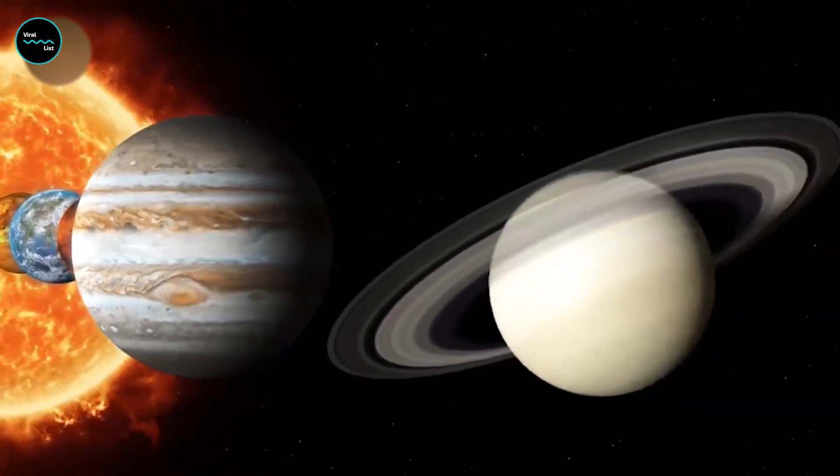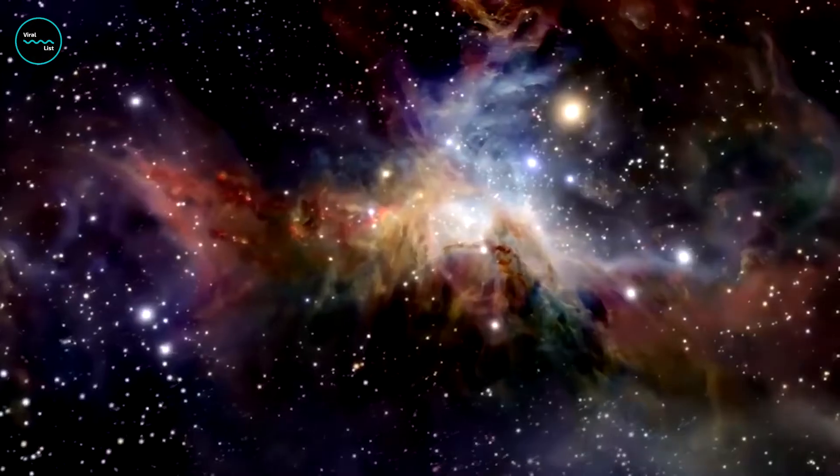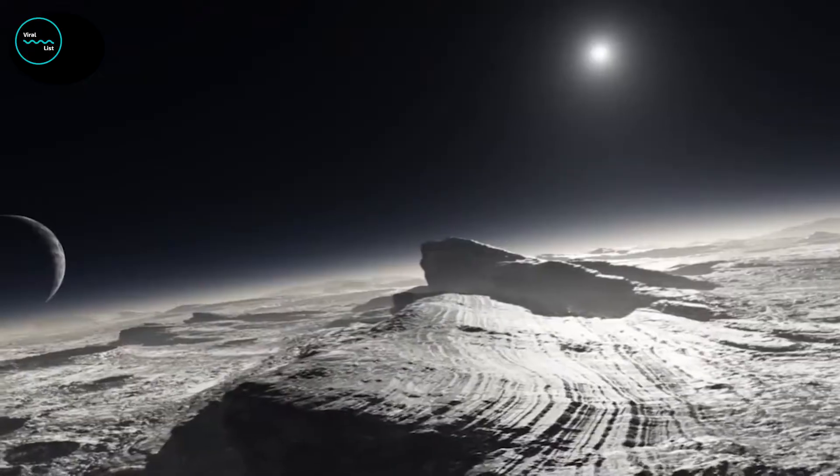Many scientists think the sun and the rest of the solar system formed from a giant rotating cloud of gas and dust known as the solar nebula. As the nebula collapsed because of its gravity, it spun faster and flattened into a disk.